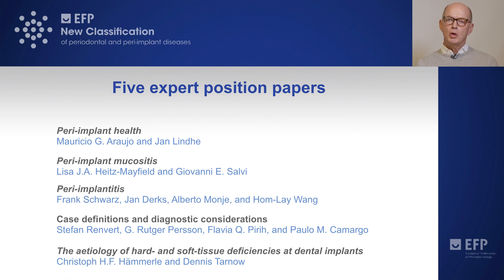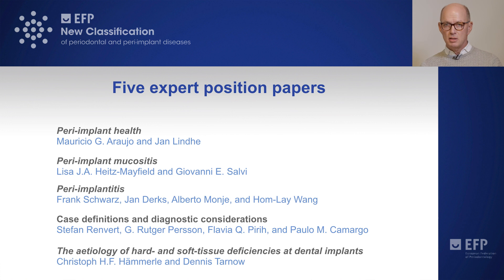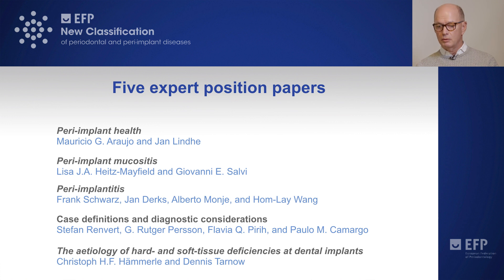When looking at diagnostic features, the most important parts of the case definitions presented here are the findings on bleeding on probing and bone loss assessed in radiographs. Bleeding on probing is the tool by which we can distinguish between healthy and diseased tissues, while bone loss should be used to distinguish between peri-implant mucositis and peri-implantitis. Bone loss should be understood as exceeding possible crestal bone level changes that result from initial bone remodeling after implant placement.